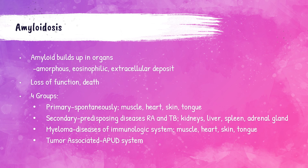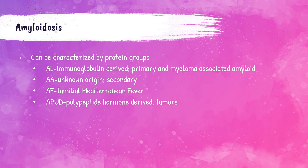The last group of amyloidosis is amyloid associated with tumors, especially those tumors of the amine precursor uptake and decarboxylation, or the APUD system. Amyloidosis can also be characterized by protein groups: AL includes immunoglobulin-derived amyloid covering primary and myeloma-associated types; AA amyloid is of no known origin and includes secondary amyloidosis; AF amyloid is hereditary; and APUD amyloid is associated with those tumor types.